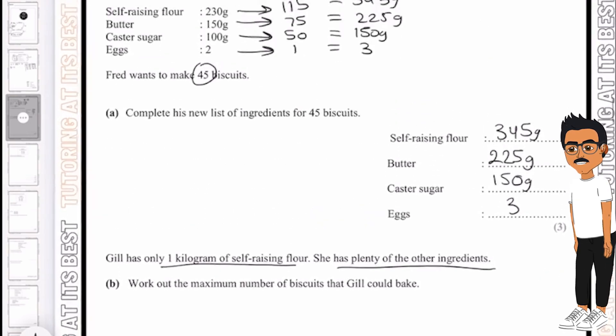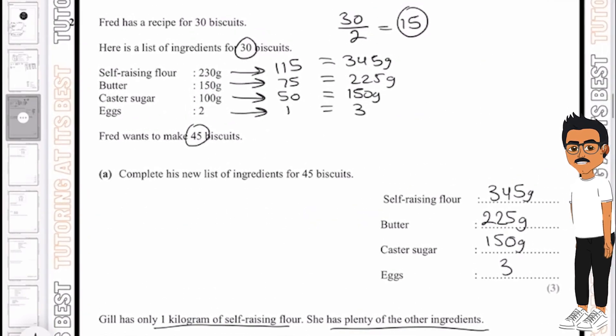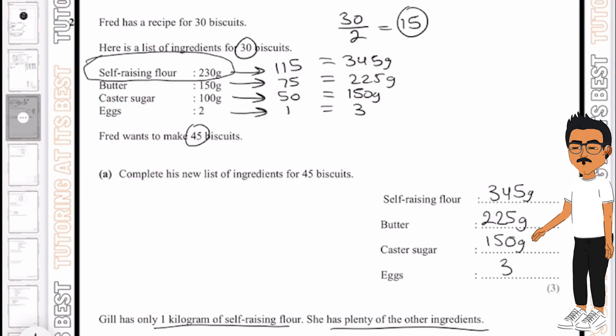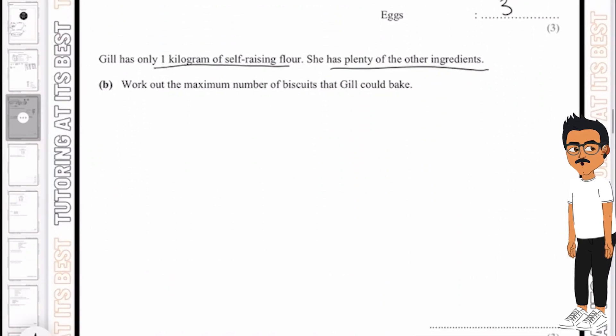So let's take a look. 1 kg of self-raising flour. We currently have 230 which gives us 30 biscuits. So let's write that down: 230 grams equals 30 biscuits.